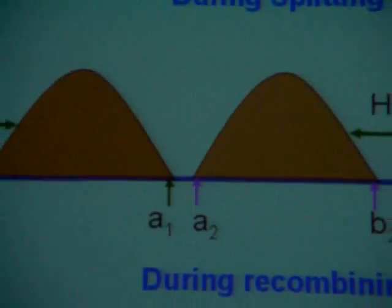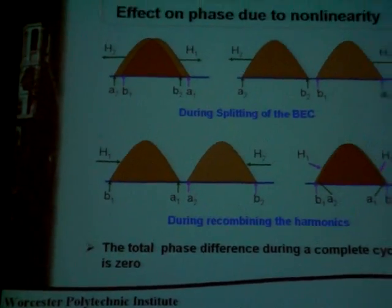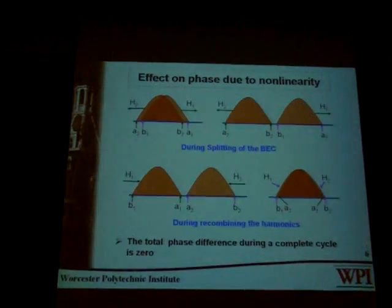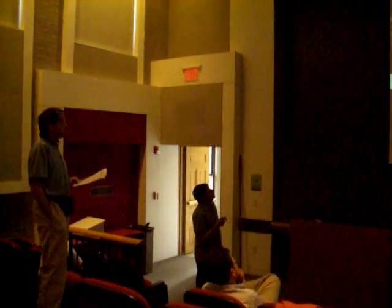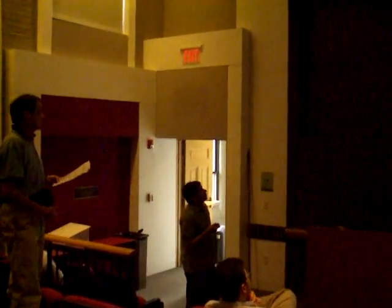Regarding the effect on phase due to non-linearity: A1 is the leading edge of the first harmonic and B1 is the trailing edge. As the two clouds separate, the leading edge immediately exits the interaction region, but the trailing edge remains for the whole separation time. The leading edge and trailing edge interact for different durations and accumulate different phases. However, when they pass each other and are finally recombined, their roles are interchanged, and the total phase difference due to the complete cycle cancels. Because of these two processes, the net phase distortion is zero, so the coherence time is infinite.